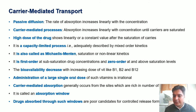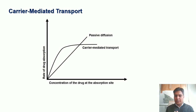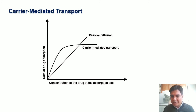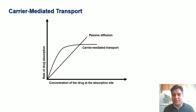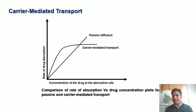In a plot of rate of drug absorption versus concentration of drug at the absorption site: passive diffusion follows first-order kinetics throughout, showing a linear relationship. Carrier-mediated transport shows first-order kinetics in the initial portion, then zero-order kinetics after carrier saturation — demonstrating mixed-order kinetics. This is the comparison of the rate of absorption versus concentration plot for passive versus carrier-mediated transport.